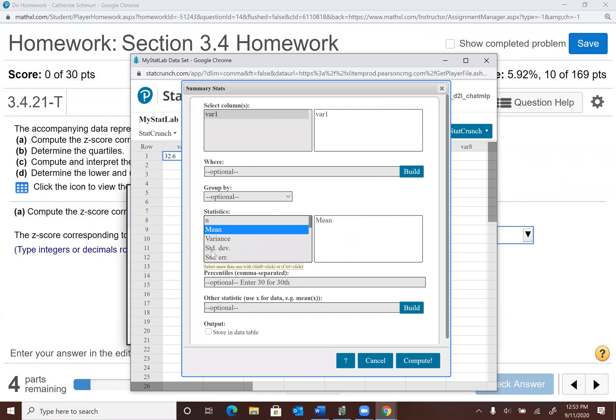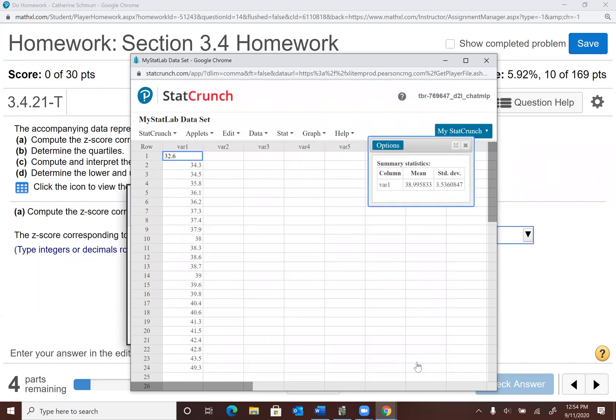And I want the mean and the standard deviation. And remember in StatCrunch, that first standard deviation, STD DEV, that's the sample standard deviation. If I had wanted the population, I would have needed to go to unadjusted. But in this case, the problem said I have a sample. So I'll do STD DEV. All right, so I get a mean of 38.995833 and a standard deviation of 3.5360847.